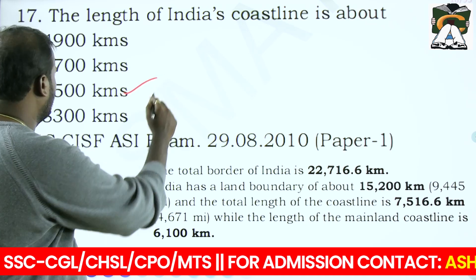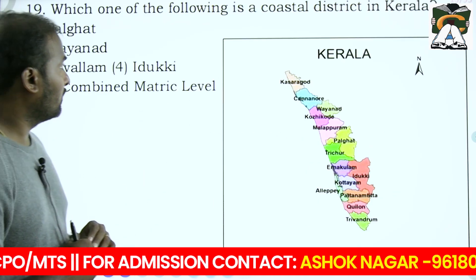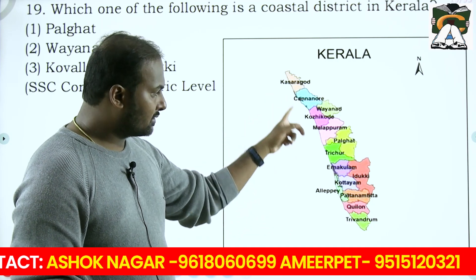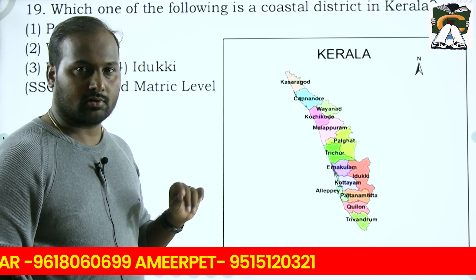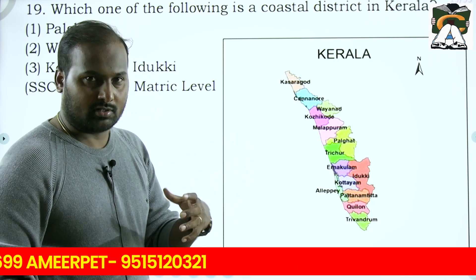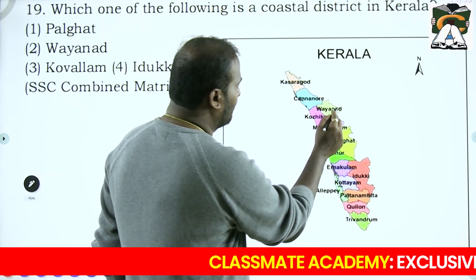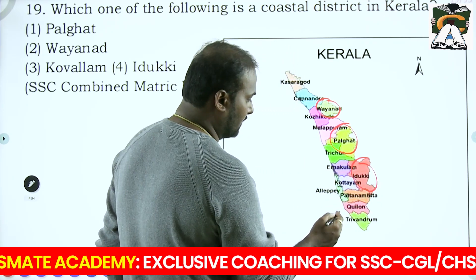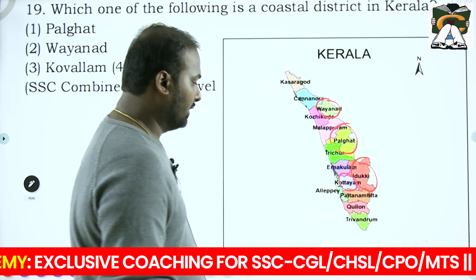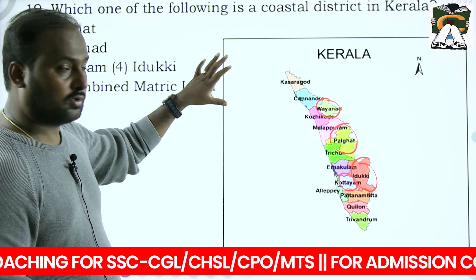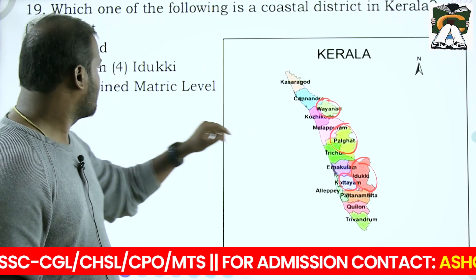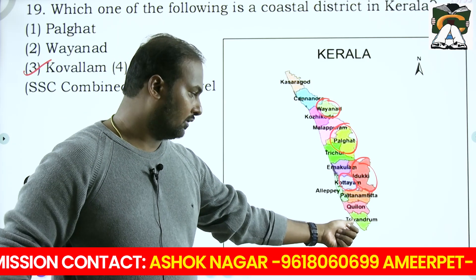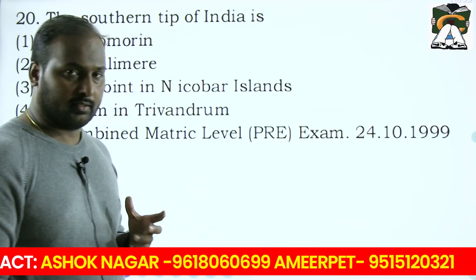'Which of the following is a coastal district in Kerala?' The shape of Kerala is peculiar - most districts have a coastal boundary but some do not. The non-coastal districts to remember are Palakkad, Idukki and Kottayam. So Palakkad is not coastal, Wayanad is not coastal, Idukki is not coastal. Your answer is Kovalam - it is a coastal beach in Thiruvananthapuram.